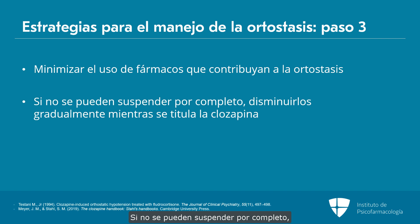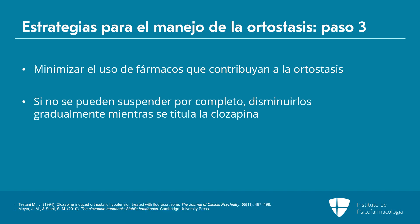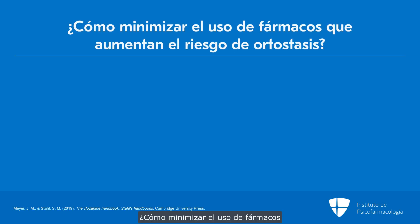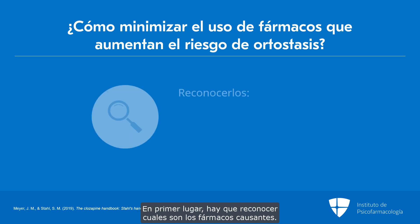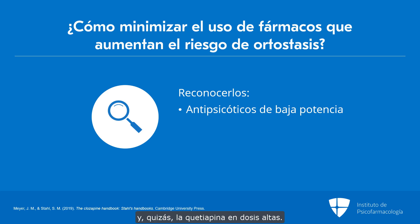If they can't be stopped completely, taper them off as clozapine is added over the first month. To minimize medications that increase the risk of orthostasis, first recognize who the offenders are. Among the psychotropics, these are going to be primarily the low-potency antipsychotics such as chlorpromazine, also iloperidone, and perhaps high-dose quetiapine.